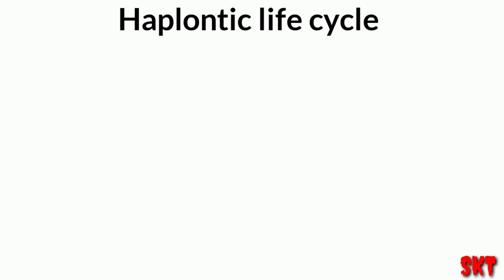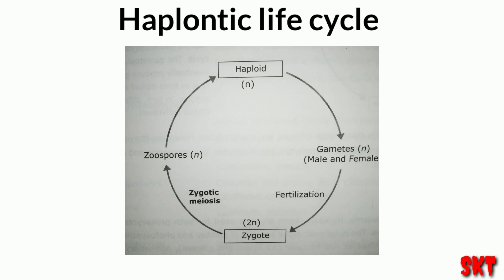The first one is the haplontic life cycle, where there is a haploid organism and it gives rise to male and female gametes, which are also haploid. Due to fertilization, a zygote is formed, which is a diploid one. The zygote undergoes meiosis to produce zoospores, which are haploid, and these zoospores germinate to form a haploid organism.